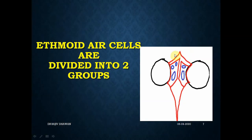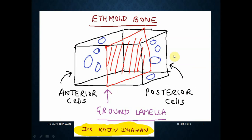Ethmoid air cells are divided into two groups. The ethmoid is the long bone between the two orbits. Imagine a partition dividing it into two components. That septum which separates the ethmoid air cells into anterior and posterior groups is called the ground lamella or basal lamella. The red-coloured structure in the image is this partition. Cells in front of this ground lamella are called anterior ethmoid air cells; cells posterior to it are called posterior ethmoid air cells.